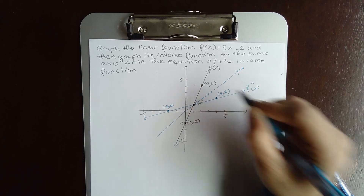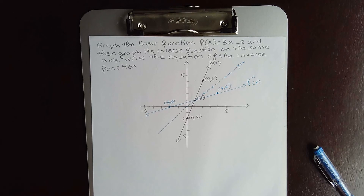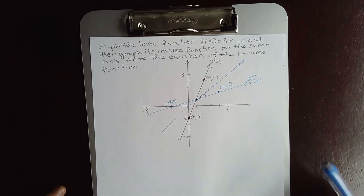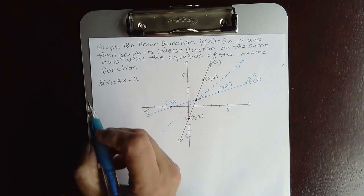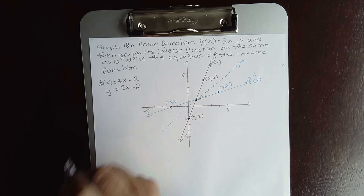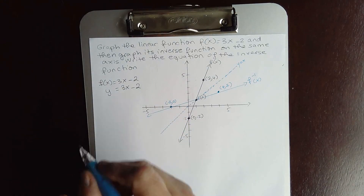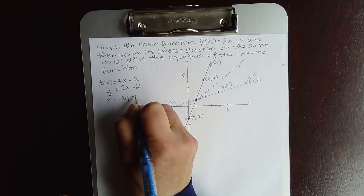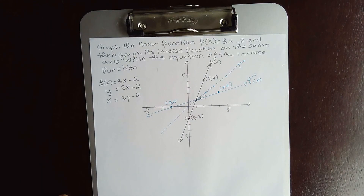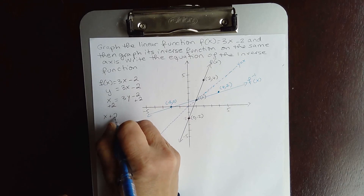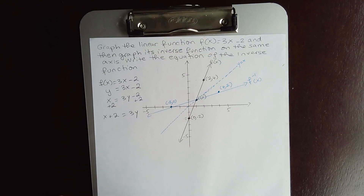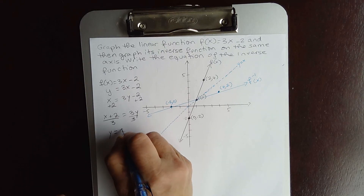This gives us the graph of f and its inverse function. Now let's find the equation of the inverse function. We start with f of x = 3x minus 2. Replace f of x with y: y = 3x minus 2. Then interchange x and y: x = 3y minus 2. Now solve for y — add 2 to both sides to get x plus 2 = 3y.